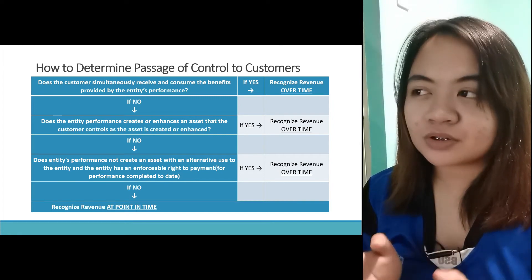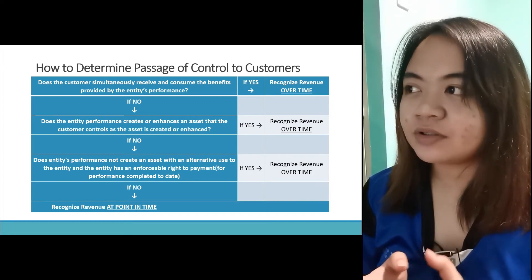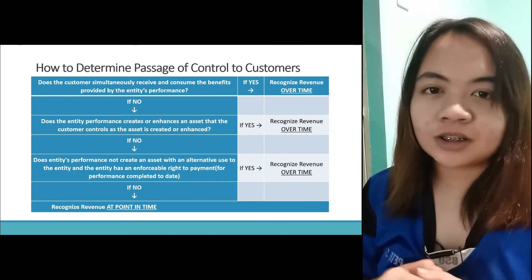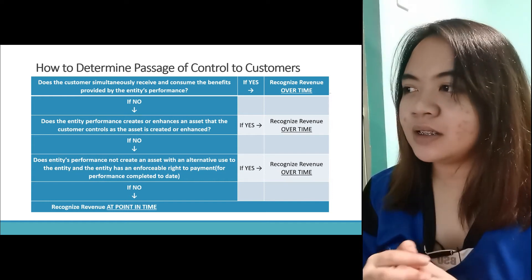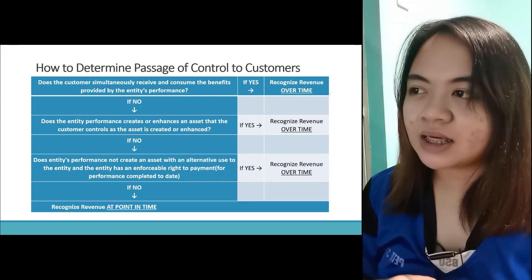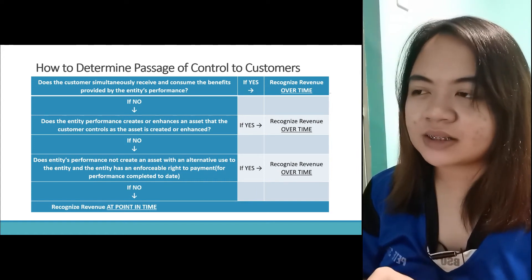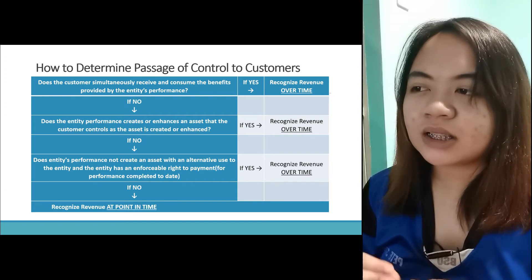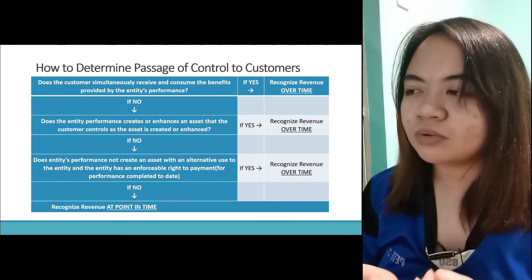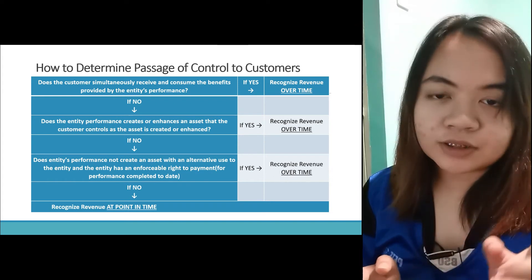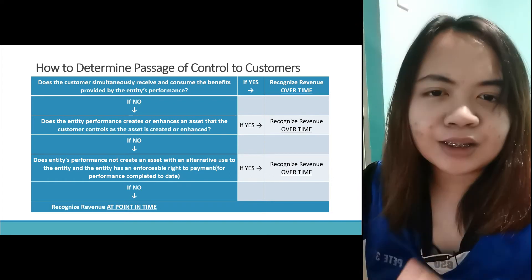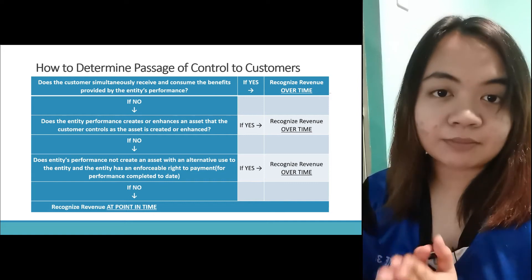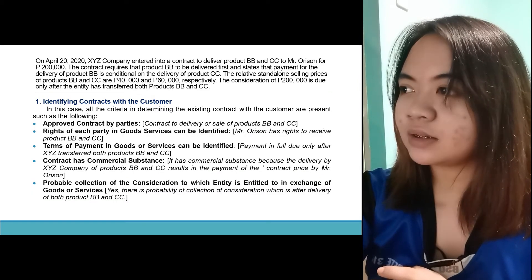Here is a guide on how to determine passage of control to customers. Does the customer simultaneously receive and consume the benefits? If yes, over time. If no, does the entity's performance create or enhance an asset that the customer controls as the asset is created? If yes, over time. If no, does the entity's performance not create an asset with alternative use and does the entity have an enforceable right to payment? If yes, over time. If no — if all answers are no — recognize revenue at a point in time.